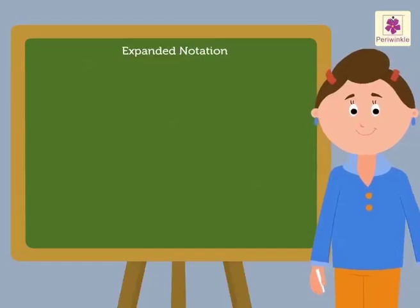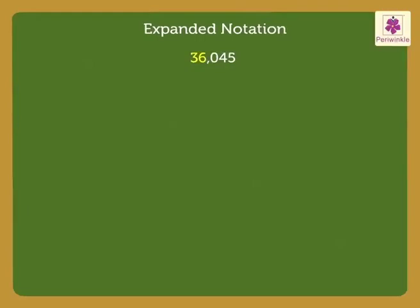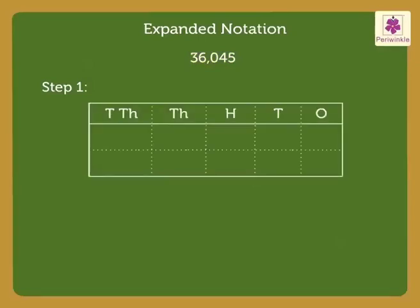Let us write the expanded notation of the number 36,045. Step 1. We write the number 36,045 in the place value chart as 3 in the 10,000th place, 6 in the 1,000th place, 0 in the 100th place, 4 in the 10th place, and lastly, 5 in the 1's place.